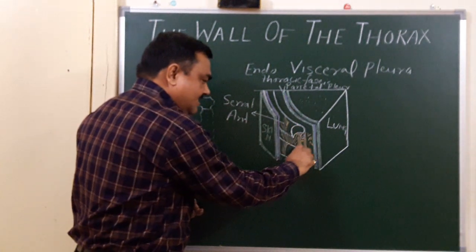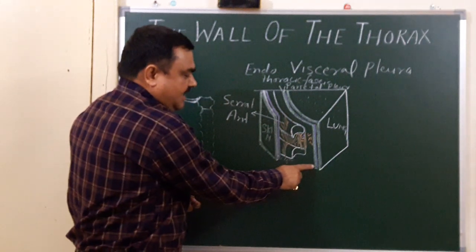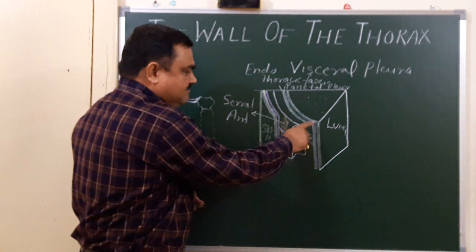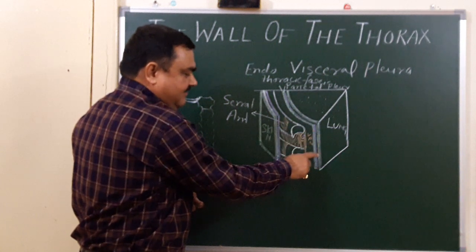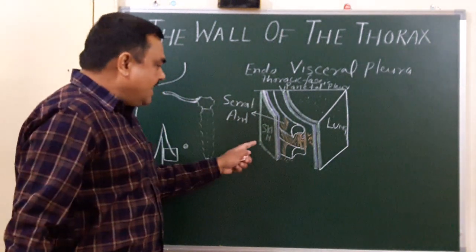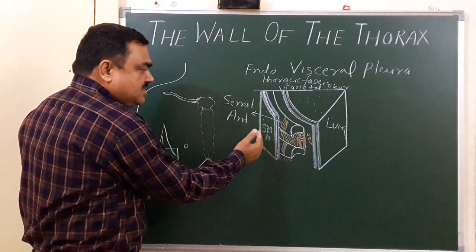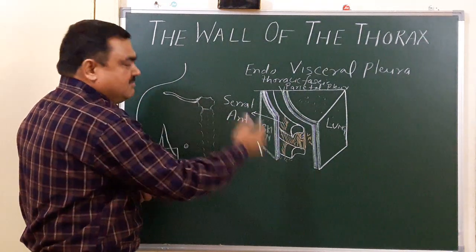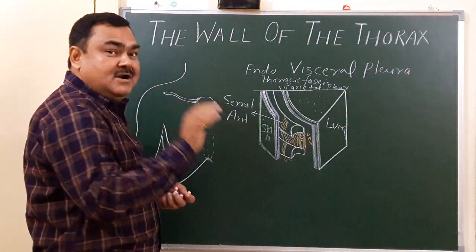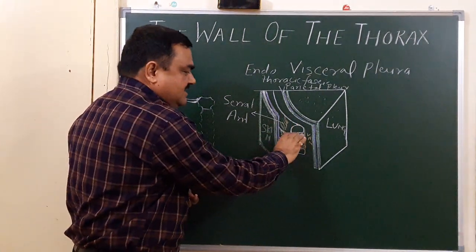Deep to the intercostal muscles there is the endothoracic fascia, then the parietal pleura, then the pleural space, then the visceral pleura, then the lung. So these are the structures from the outer side — from skin to lung — this is the arrangement of structures in the thoracic region.